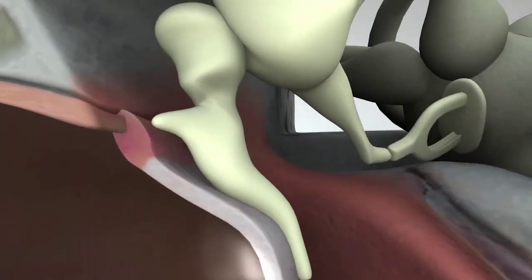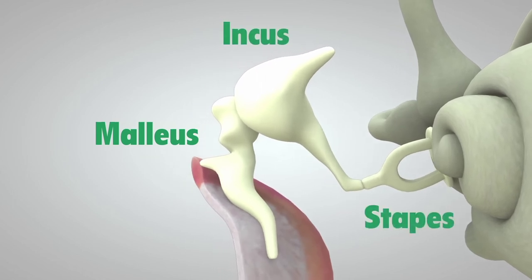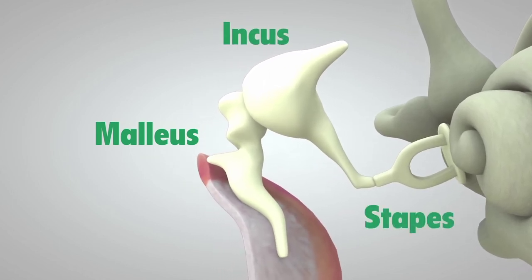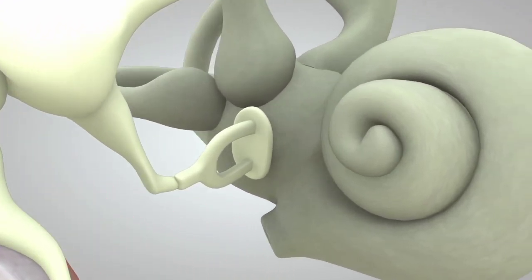which in turn vibrates three tiny bones called the malleus, incus, and stapes. These bones amplify or increase the sound vibrations and send them to the cochlea.